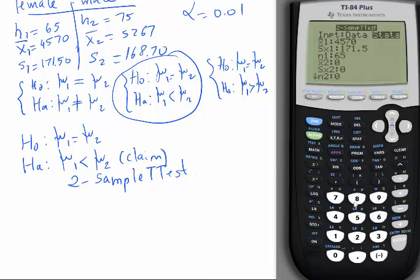Enter. X2 bar is 5,267. S2 is 168.7. N2, which is what? 75.